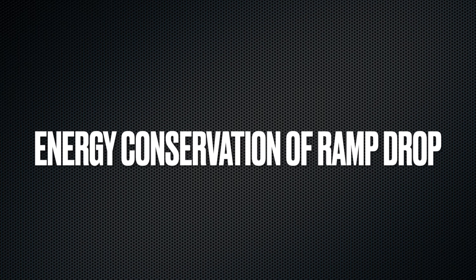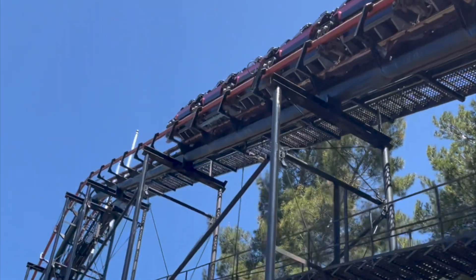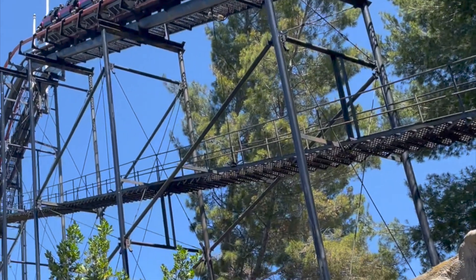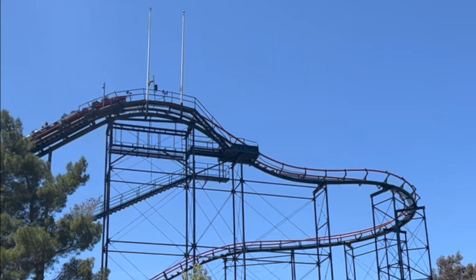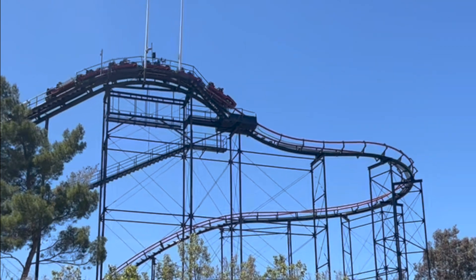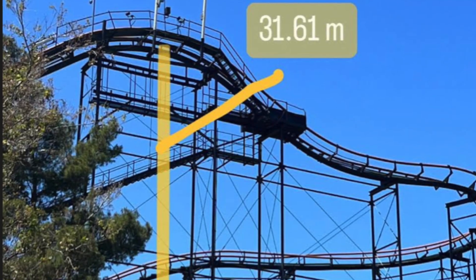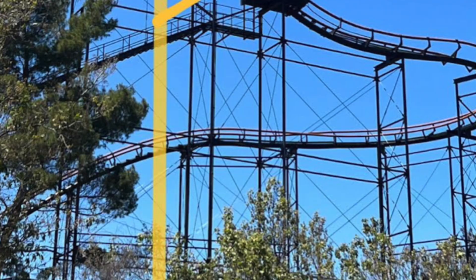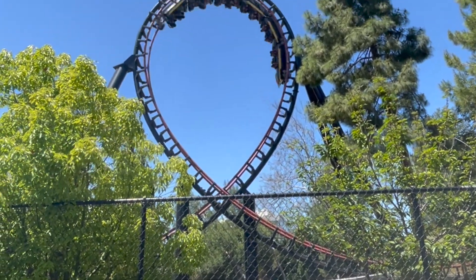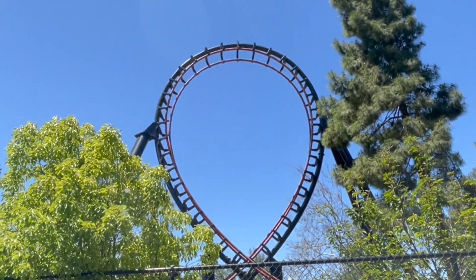We can find the total energy of the cart Earth system, and that is equal to the gravitational potential energy at the top. This energy is gained by the chains doing work on the cart. The max height that it goes to is 103.7 feet, or 31.61 meters, and at the top we assume that it has no kinetic energy. But wait, we need to find the total energy first.